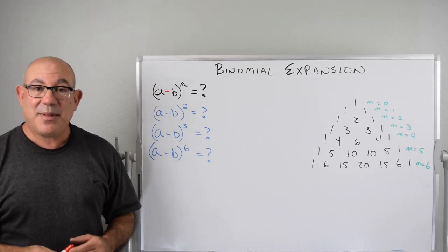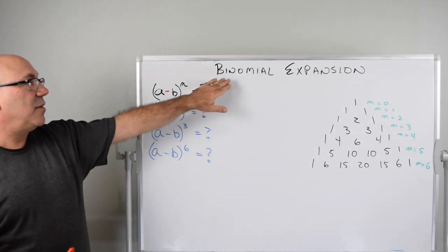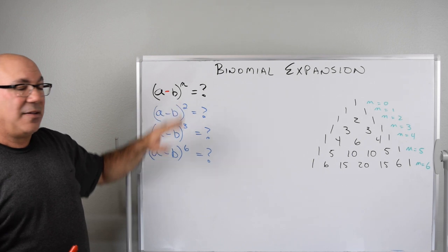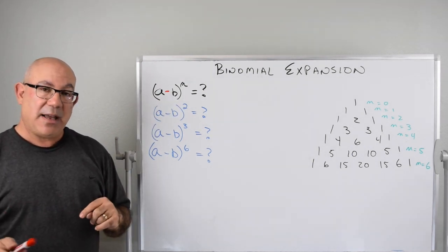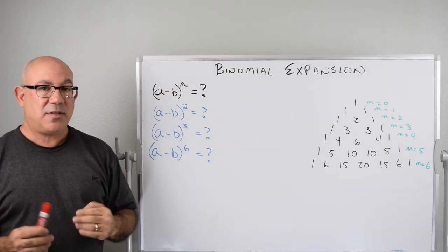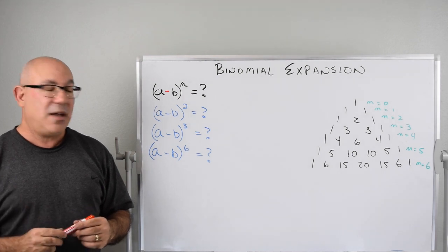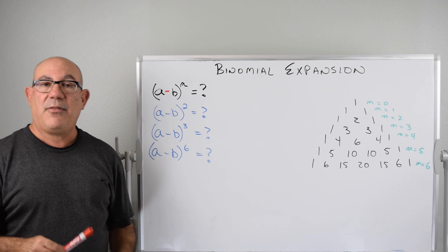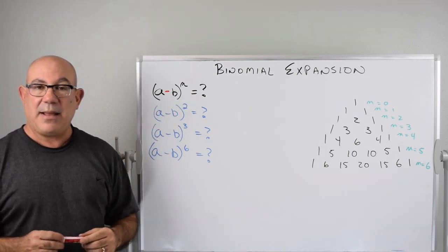Welcome to Let's Calculate Something. Today we have some more algebra — we're going to look at the binomial expansion theorem for (a minus b) to the n. We did a whole video on (a plus b) to the n, and you can see that video linked here. We're going to use those tricks in this video, but we're going to have to modify Pascal's Triangle first for the negative b part of it.